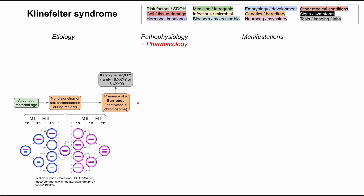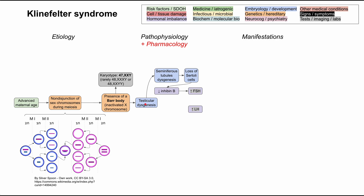There are many manifestations largely related to low androgens and low testosterone, and we'll go through how we end up there. The presence of this Barr body — this extra X chromosome — leads to testicular dysgenesis, which causes hormonal imbalances, mainly high FSH and high LH. Specifically, we have seminiferous tubule dysgenesis, which means loss of the Sertoli cells. You'll have low inhibin, which results in high FSH. So that explains the FSH.